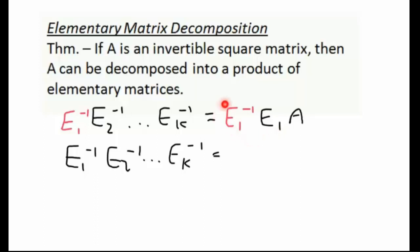And simplifying on the right-hand side, we notice that E1 times E1 inverse, that'll be the identity matrix. So we'd be left over with the identity matrix times A, and that's just A.